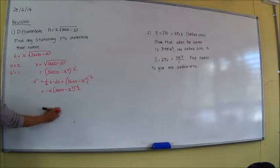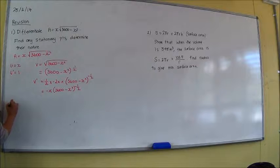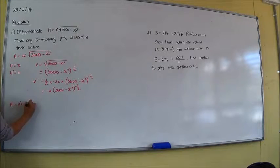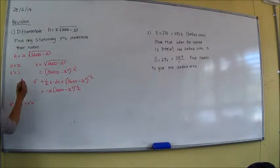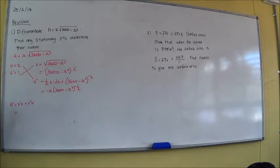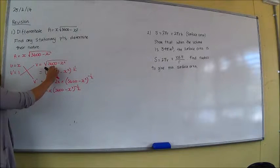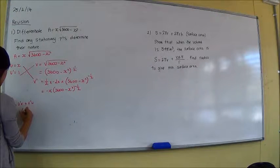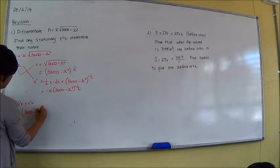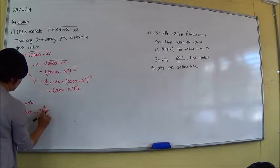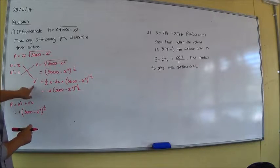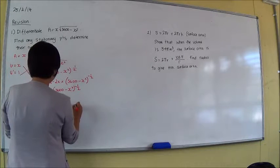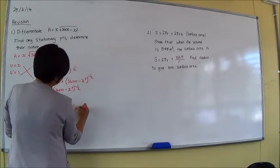So we do the product rule. A dash equals u dash v plus v dash u, which is a cross multiple. So that's 1 times the square root of 3,600 minus x squared, and it's v dash times u, so plus x times negative x, brackets, 3,600 minus x squared.